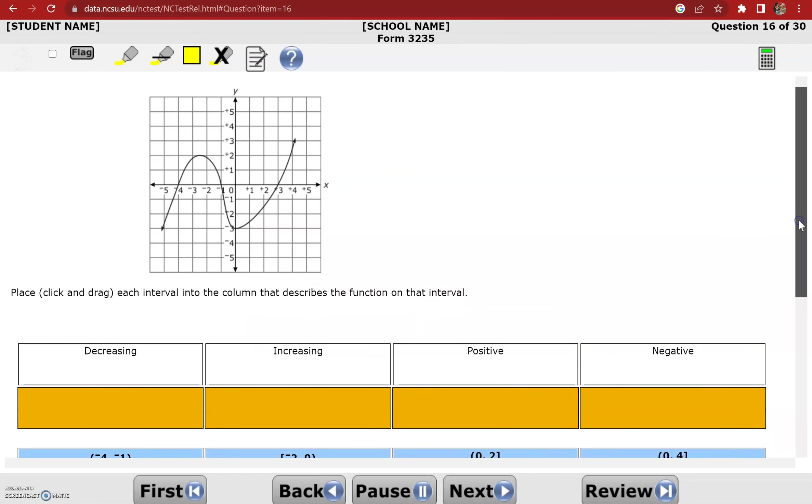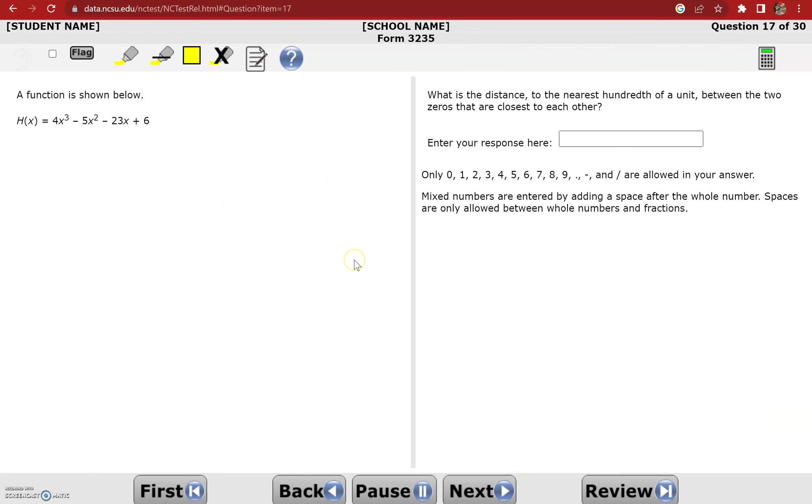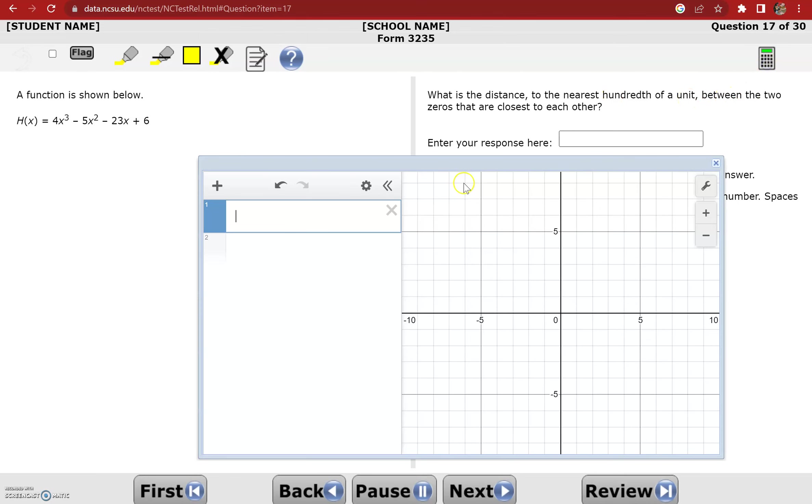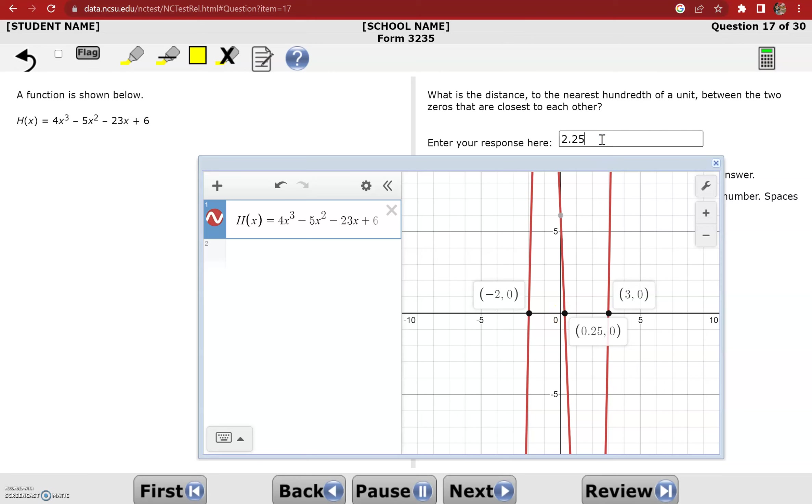This is a problem that you could check out his videos for. I'm going to focus on Desmos strategies. So we have a function h of x shown below. It's a polynomial, cubic polynomial. And this question says, what is the distance to the nearest hundredth of a unit between the two zeros that are closest to each other? So we're back to the types of problems in my first video where we're looking for zeros, and Desmos is a great way to do that. So I have 4x cubed minus 5x squared minus 23x plus 6. And I have these zeros. The question says, what is the distance between the two zeros that are closest to each other? So are the zeros on the left closer or the ones on the right closer? And I can see that the ones on the left are visually closer. Now the question is, how far apart are they? So to get from negative 2 to 0 would be a distance of 2, and then I go another .25 from there.